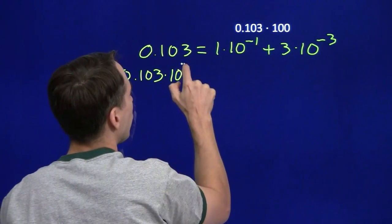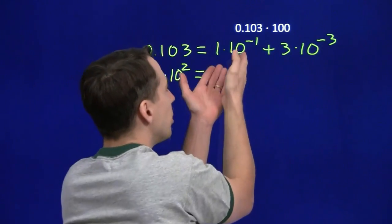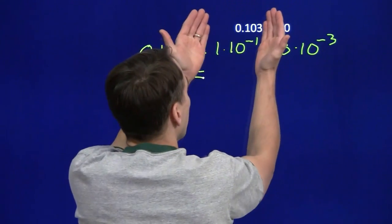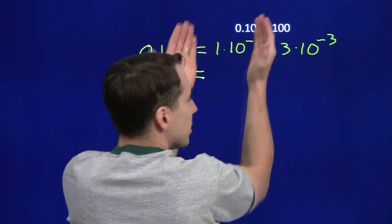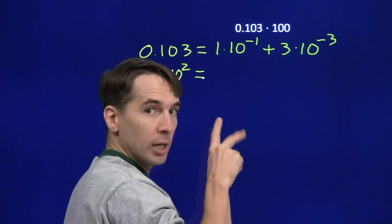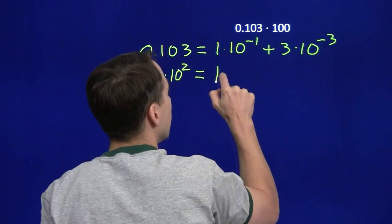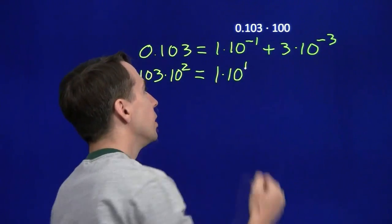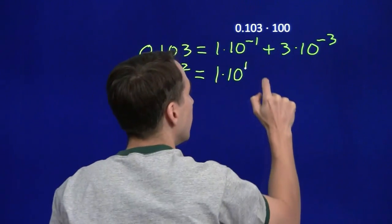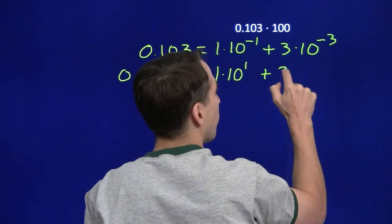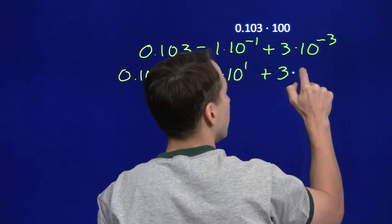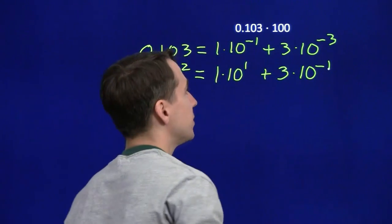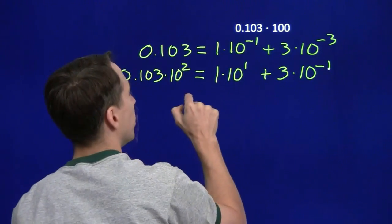Now 100 is just 10 squared, and again we're just going to multiply each of these terms by 10 squared — we're doing the distributive property. Multiplying the first term by 10 squared: 10 to the minus 1 times 10 to the 2 — add the exponents — you get 10 to the first. All we're doing is increasing the exponent by 2. We do the same thing with the other term, multiply it by 10 to the second, and we get 10 to the minus 1, just adding 2 onto the exponent.